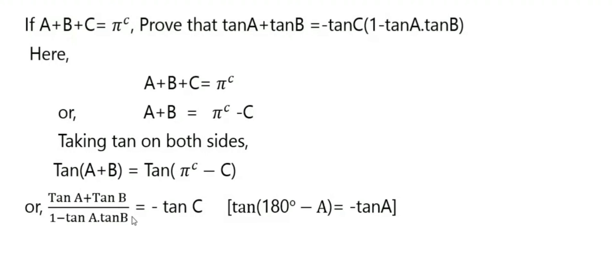We applied the formula of tan(A + B) on the left-hand side. On the right-hand side, we know that π radians is 180 degrees. Tan(180° - A) equals -tanA, so tan(180° - C) is -tanC. You have been given the reason here.